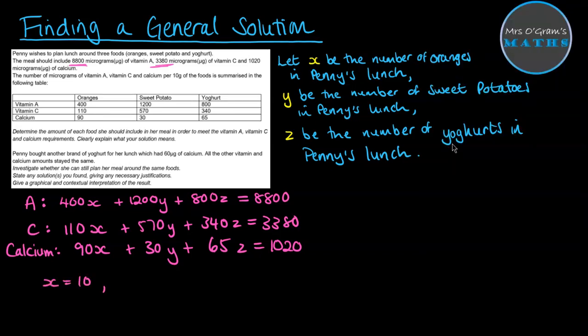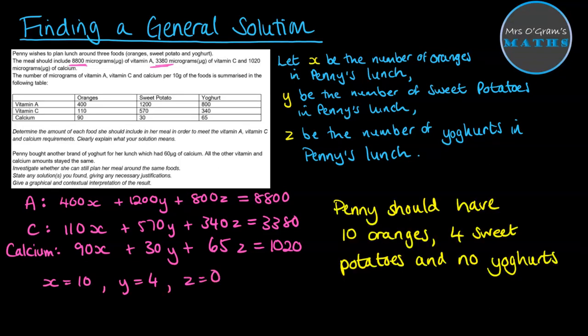So x equals 10, y equals 4, z equals 0, and then we need to answer it in context. So Penny should have 10 oranges, 4 sweet potatoes, and no yogurts.